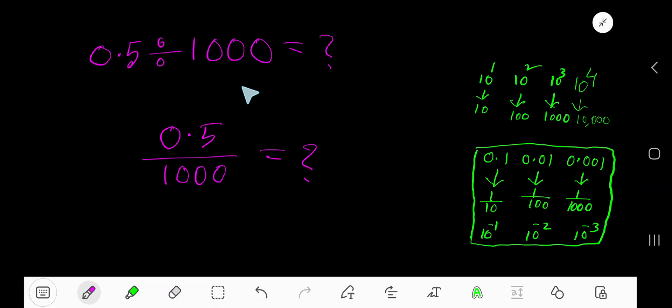0.5 divided by 1,000. 1,000 is a divisor—10, 100, 1,000, 10,000—these are called powers of ten. To divide a decimal number by a power of ten, just count the number of zeros in the power of ten